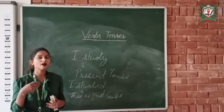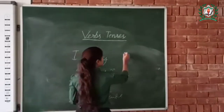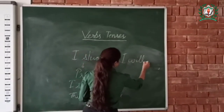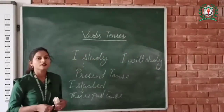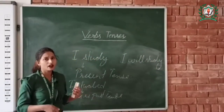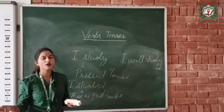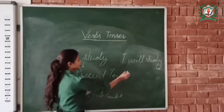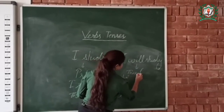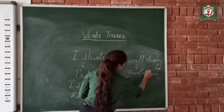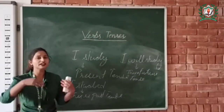Past tense tells us about an action of the past. What if I say I will study? Where does it suggest? I will study in the future — maybe tomorrow or later. So this is future tense. Future tense tells us about an action that will take place in the future.